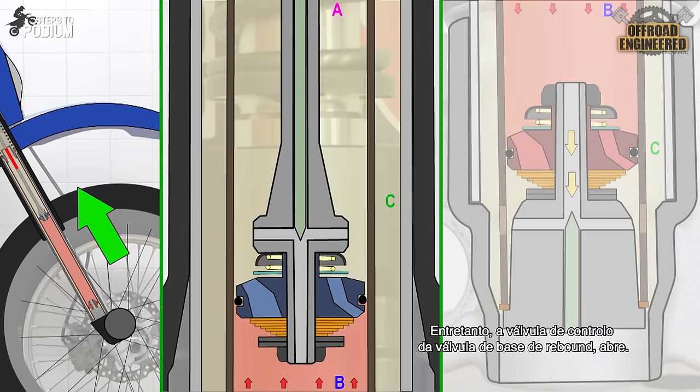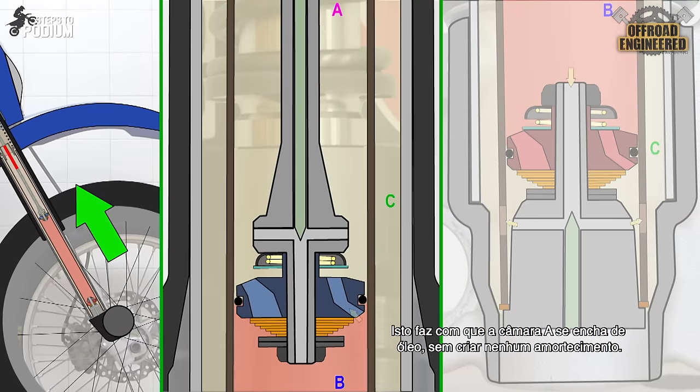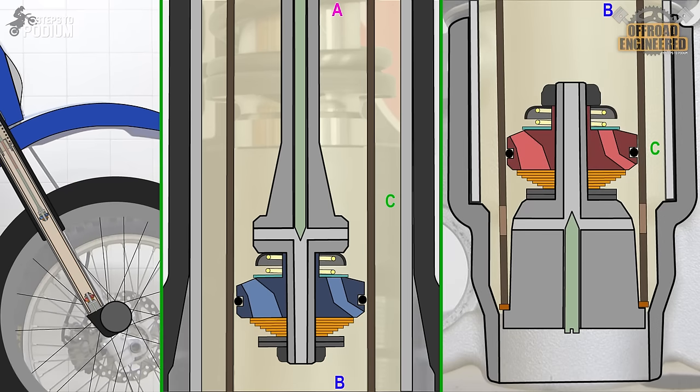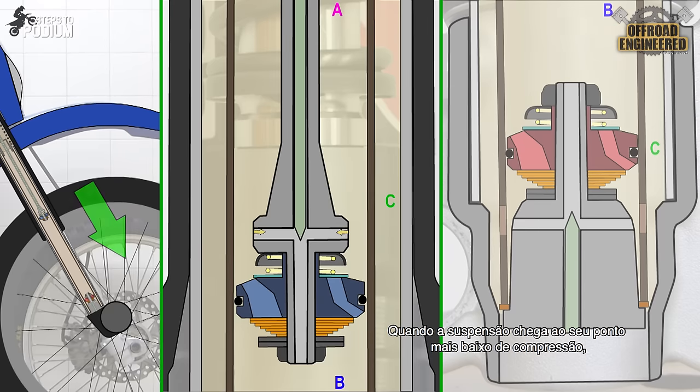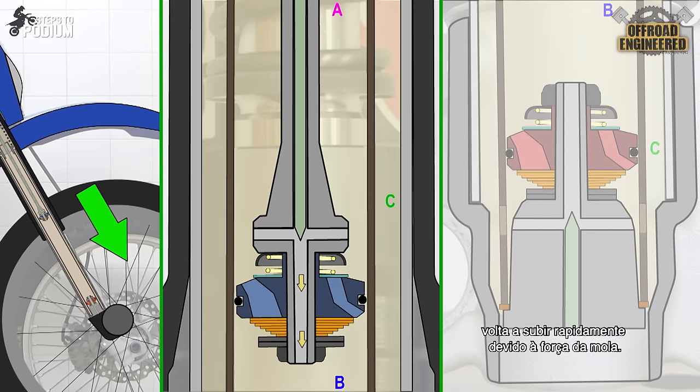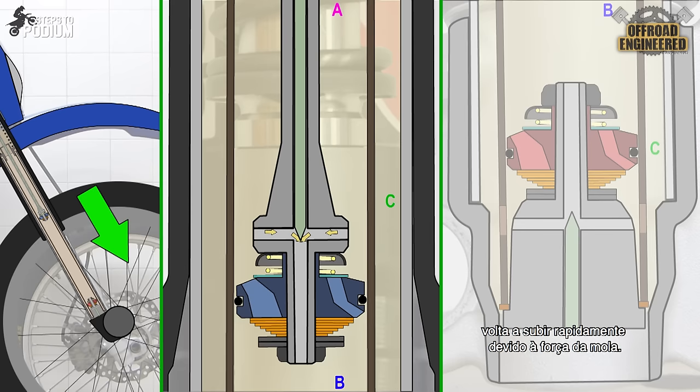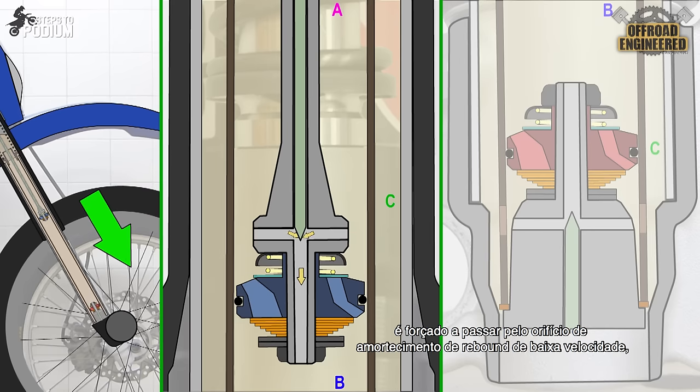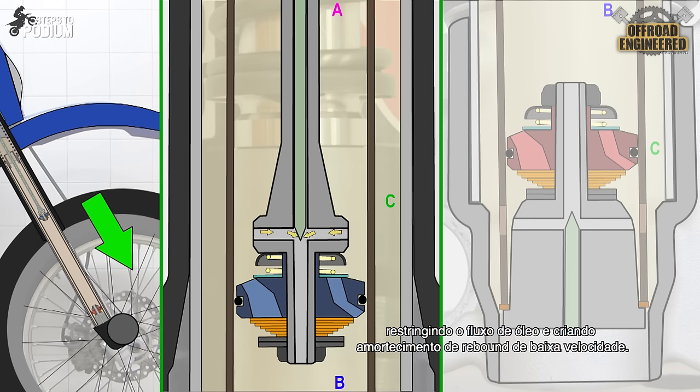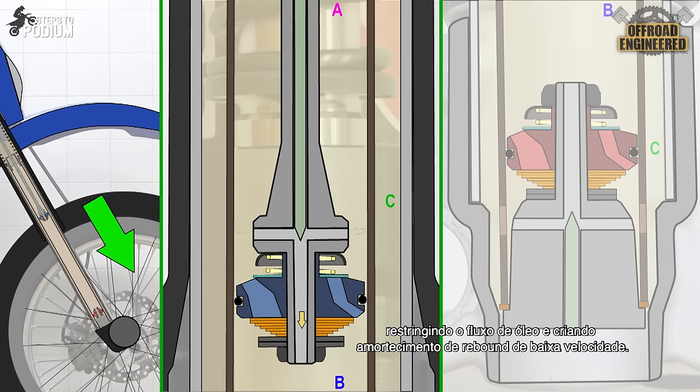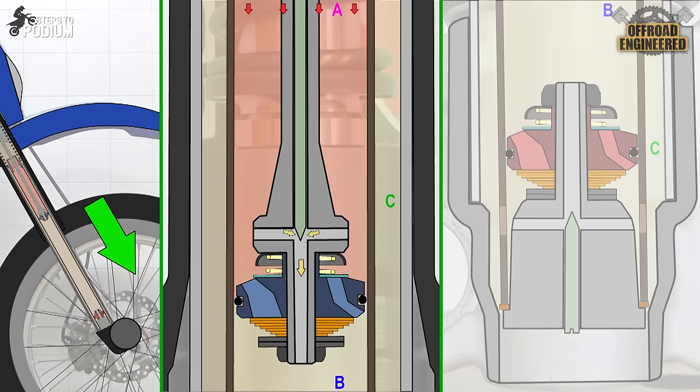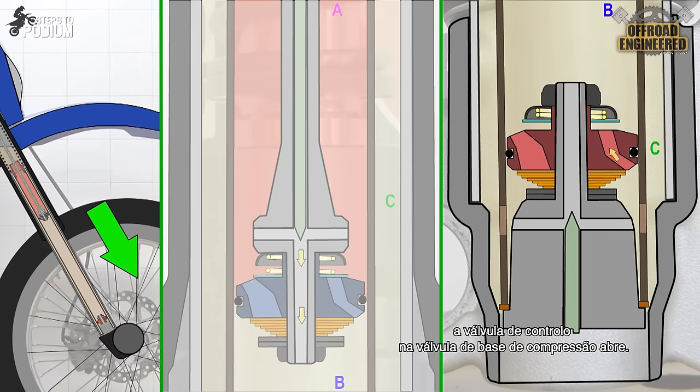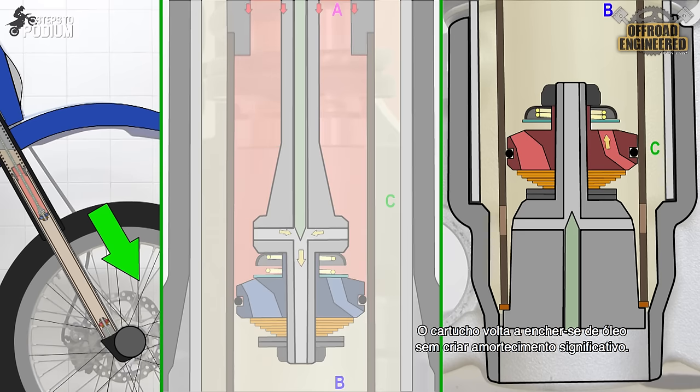In the meantime, the check valve in the rebound base valve opens to fill chamber A with oil, without creating any considerable damping. When the suspension reaches its lowest point of compression, it rapidly starts coming up due to the spring's force. The volume of oil that is in chamber A is forced to go through the low-speed rebound orifice in the rebound base valve, restricting the oil's flow and creating low-speed rebound damping. As in the compression stroke, the check valve opens in the compression base valve to refill the cartridge, without creating any considerable damping.